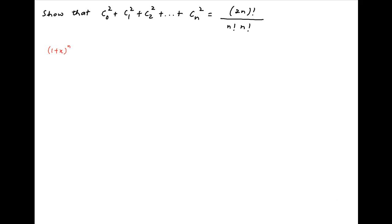The standard binomial expansion of (1 + x)^n is equal to C0 + C1·x + C2·x² + ... + Cn·x^n. Let's call this Equation 1.